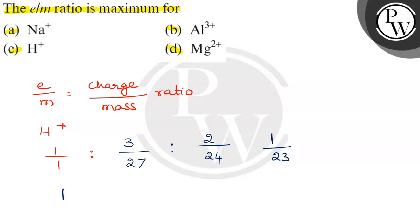So, we can write like this. 1. And this is 1 by 9. This is 1 by 12. And this is 1 by 23.